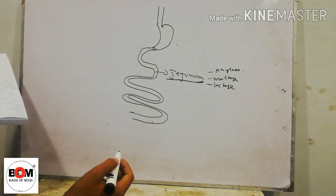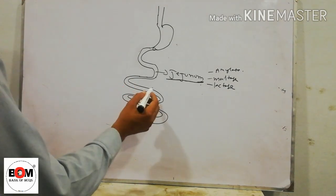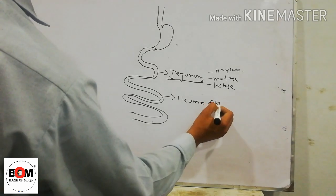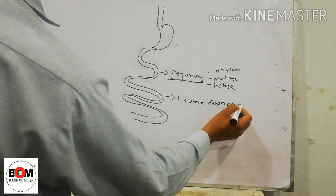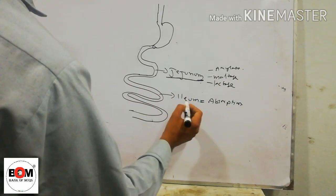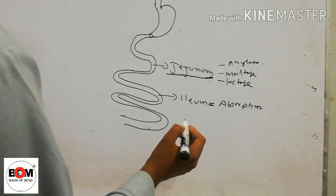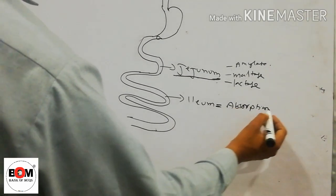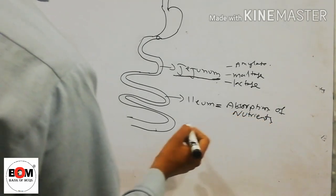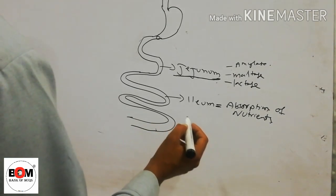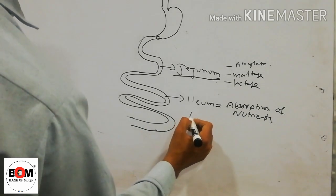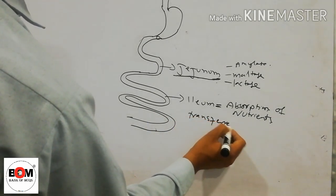From the duodenum, the food enters into the ileum. In the ileum, absorption occurs. The food which is converted into smaller substances or nutrients is absorbed and transferred to the blood.